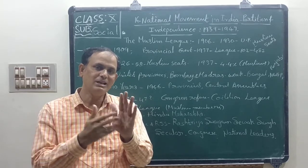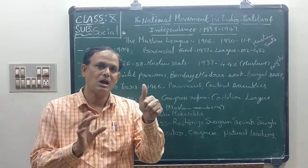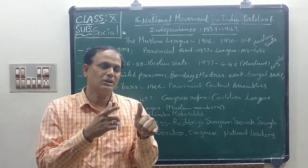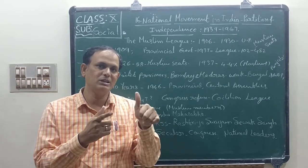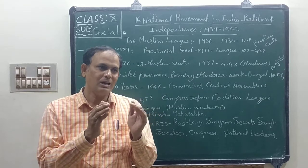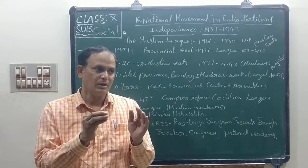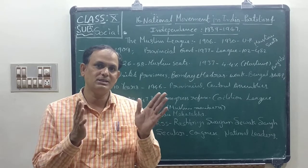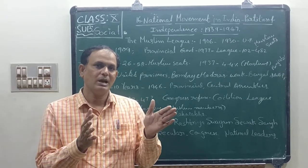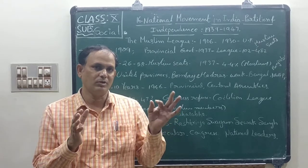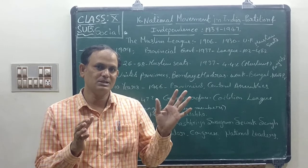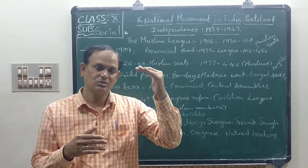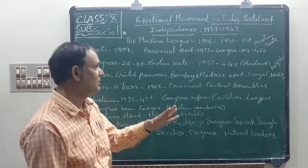Our Indian leaders questioned the British about the freedom of our country. The British had accepted the 1935 Indian Government Act. According to this act, they allowed elections and Indians could stand as representatives. So in 1937, our Indian leaders stood for elections, they won, and were appointed as ministers. One person was appointed as prime minister, but the prime minister was under the control of a British official.